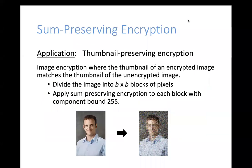Tajik et al. presented this problem along with an application: thumbnail-preserving encryption. The idea is that you want to encrypt an image so that the thumbnail is preserved — both the original and encrypted image have the same thumbnail. The thumbnail is created by dividing an image into B×B blocks of pixels, where each block is replaced by a single pixel whose value is the mean of the original pixels. By applying a sum-preserving encryption scheme to each block, both images end up with the exact same thumbnail. Each pixel is also bounded between 0 and 255.